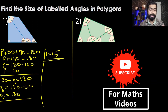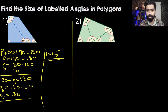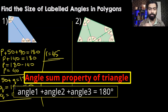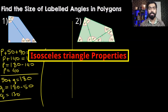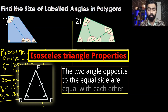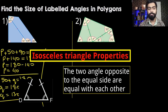In question number two it may seem very complicated, but it is not at all. We will be using the angle sum property of triangles and also the understanding of isosceles triangles. In an isosceles triangle, two sides are equal and two angles are equal, and those two equal angles are always opposite to the equal sides.